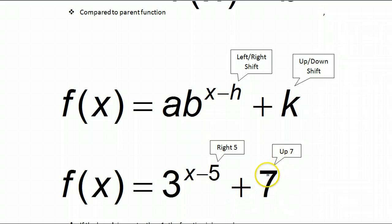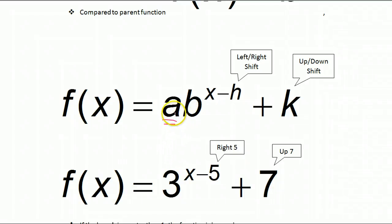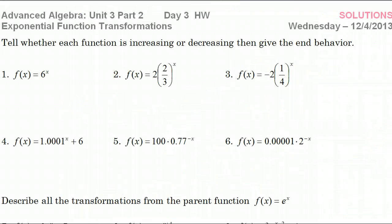Minus seven would move it down seven. Now, the new thing is this a value. The number in the front — if it's bigger than one, that's going to cause a vertical stretch; the graph will be taller than it was before. If this number is less than one, like one-third or one-half, that's going to cause a vertical compression where the graph is shorter. And if it's negative, it'll be a reflection. It'll be easier if we look at actual problems.